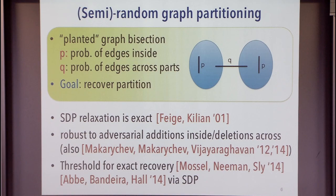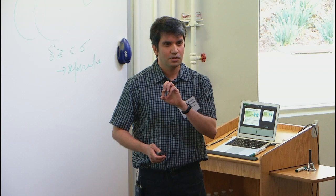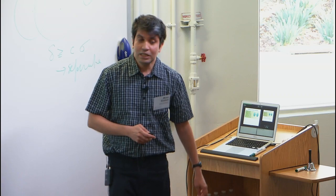The nice thing about showing a convex relaxation is integral is that you get the result for an even stronger semi-random model. This notion of semi-random graph partitioning has been taken to new heights by the work of Makarychev and Vijayaraghavan. Now we actually know the exact threshold where exact recovery is possible — above the threshold we can do this via semidefinite programming, and below the threshold it's not possible.